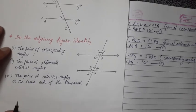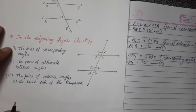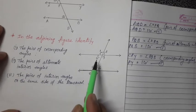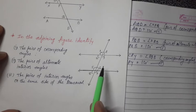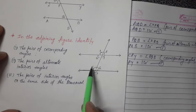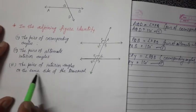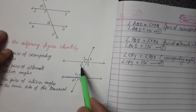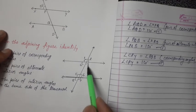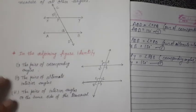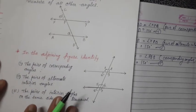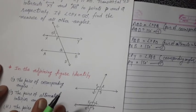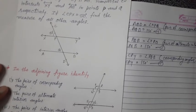For corresponding angles, they are on the same side of the transversal with one exterior and one interior. The four pairs are: angles 1 & 5, 2 & 6, 4 & 8, and 3 & 7. For alternate interior angles (opposite side, both interior): pairs are 4 & 6, and 3 & 5. For co-interior angles (same side): pairs are 4 & 5, and 3 & 6. Write these down yourself.